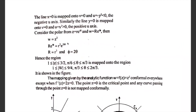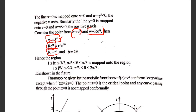Now consider the polar form of w = z². Let z = re^(iθ) and w = Re^(iφ). Then w = z² gives Re^(iφ) = r²e^(i·2θ), which implies R = r² and φ = 2θ. So under w = z², the modulus is squared and the argument is doubled.